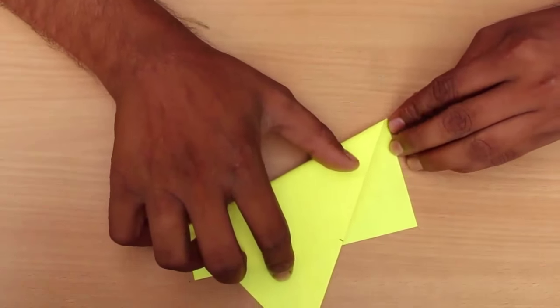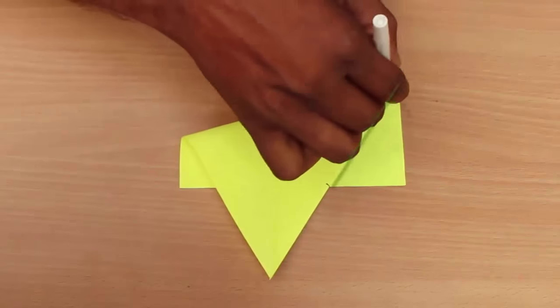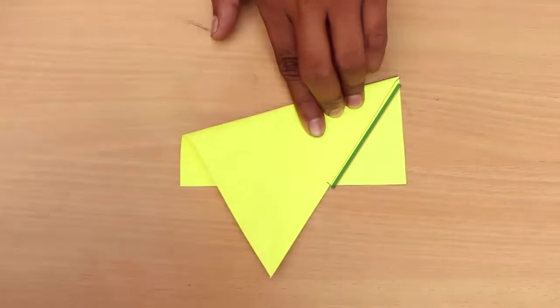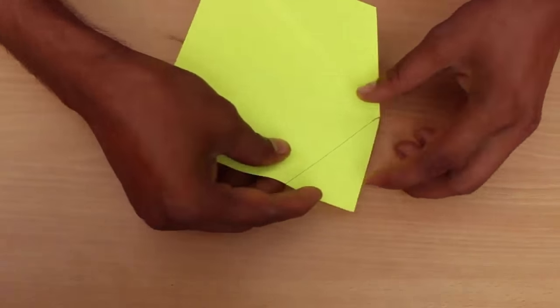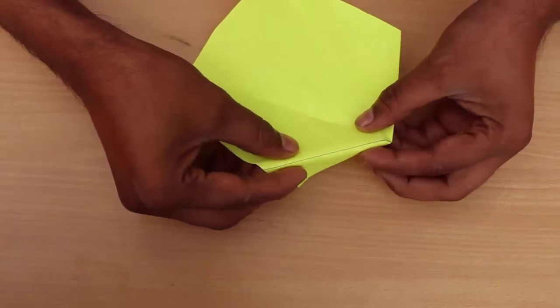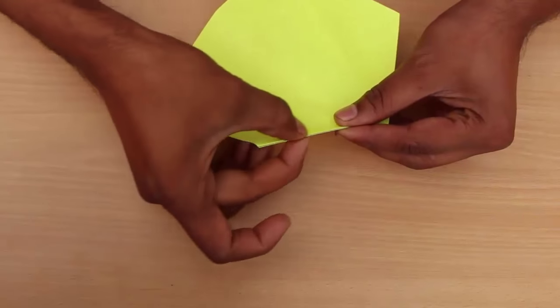Now that we have this side of the pentagon, we mark this side from the half point of a square on two adjacent sides of the square and fold the remaining part. Now these are the two sides of the pentagon.